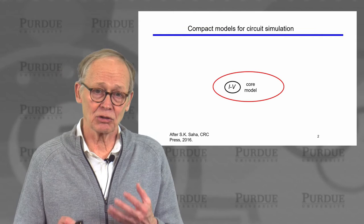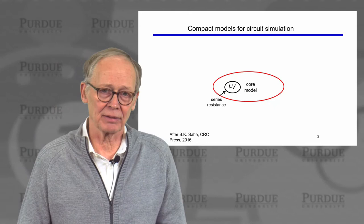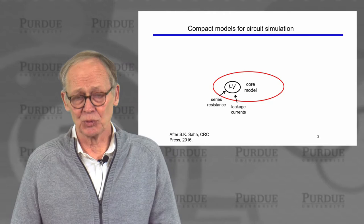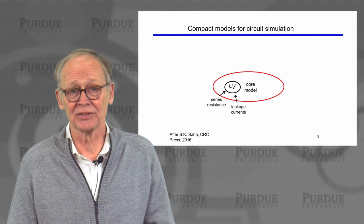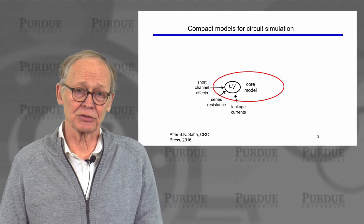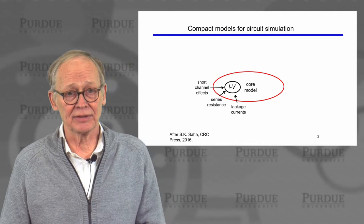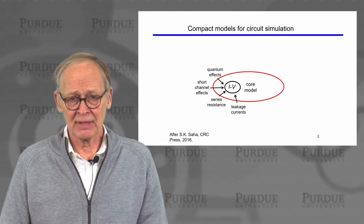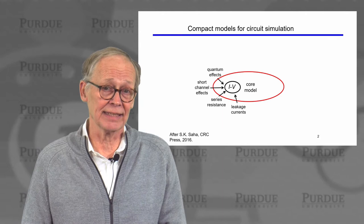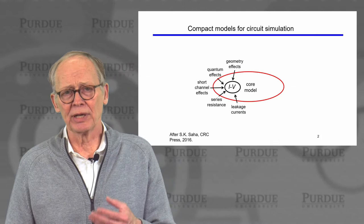If we're talking about circuit simulation, we'll have a core model. The core model can be a strongly physics-based model for the current-voltage characteristics, something like the MVS model we've been discussing. It needs to include a number of effects: series resistance — we've talked about how to do that — various leakage currents, sub-threshold current, gate leakage currents, and leakage currents at the drain. It needs to treat channel length effects; our MVS model is designed for short-channel transistors, but a designer has available transistors of a wide variety of channel lengths. There are also quantum mechanical effects that have become important in the operation of modern devices and need to be accounted for in compact models.